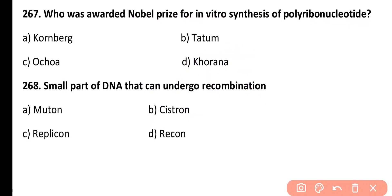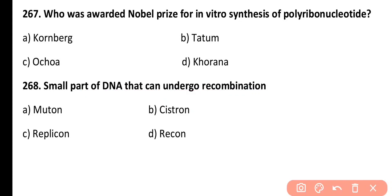Question 268. Small part of DNA that undergoes recombination: Muton, Cistron, Recon, or Replicon. Correct answer is Option C. Recon is a small part of DNA that undergoes recombination.